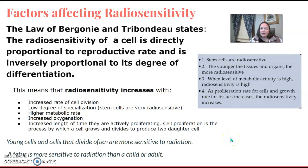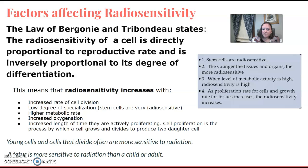There's a law that we hear quite a bit with rad safety — the Law of Bergonié and Tribondeau. It's essentially an outline telling us which cells are more sensitive to radiation than others and what characteristics make them more sensitive. It relates to the reproductive rate and the degree of differentiation. Cells are more radiosensitive when they are dividing, have a low degree of specialization, and are oxygenated. Stem cells are very radiosensitive, and the younger the tissues and organs, the more radiosensitive.